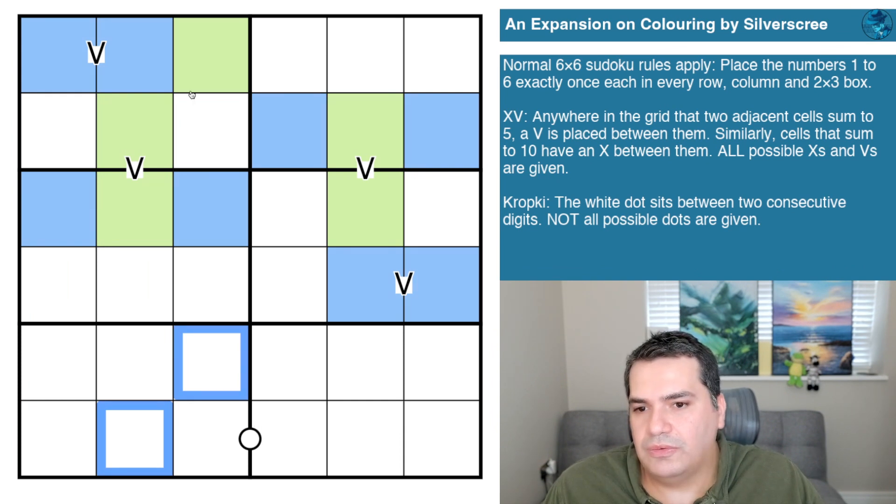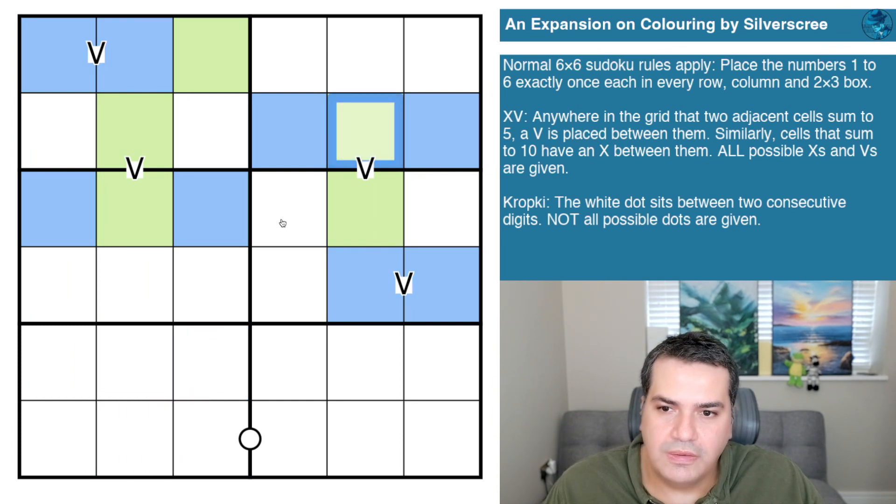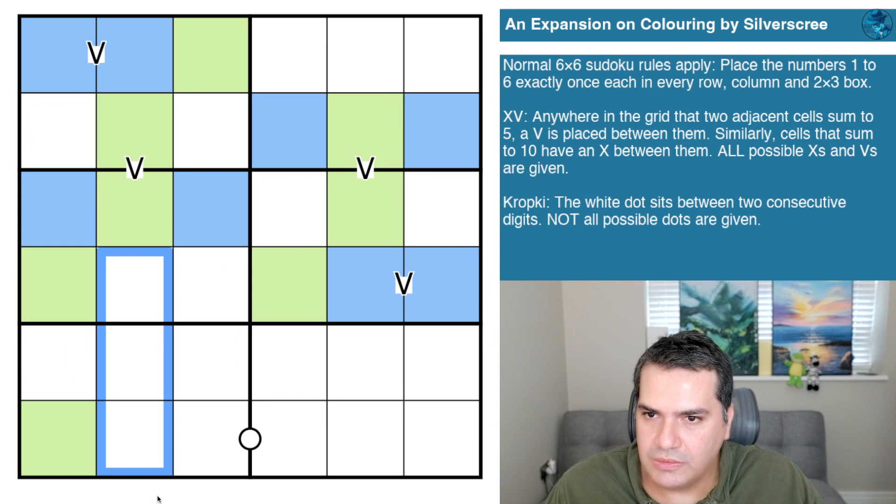We need a blue in a diagonal sort of formation in here which we'll need to figure out at some point. Let's talk about greens. This cell here can't be in either of these two, otherwise it would be a V, so that's the remaining green. These two are clearly different, this one is clearly the same.